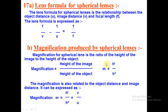Now, magnification for lenses. Magnification m = height of image divided by height of object - this formula is the same for both lens and mirror. However, the other form differs: for mirrors, magnification = −v/u, but for lenses, magnification = +v/u. This sign difference is the only distinction between the two.